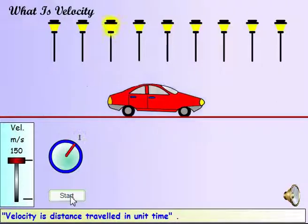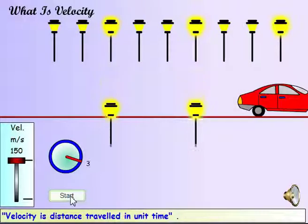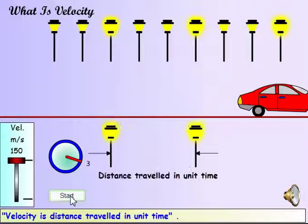Velocity is the distance traveled in unit time. The car passes lampposts every second, which light up as the car passes them. Since the time taken between two successive lampposts is one second, the velocity here will be the distance between successive lampposts.